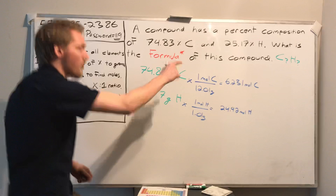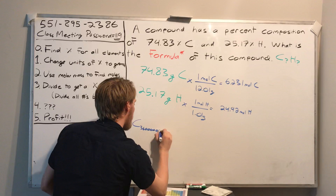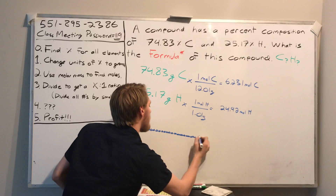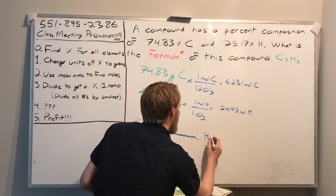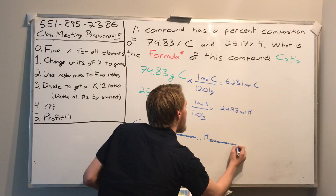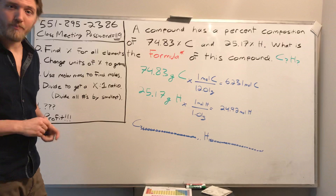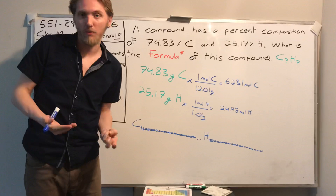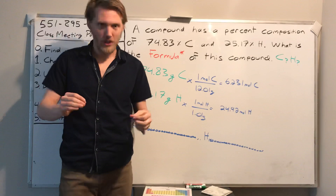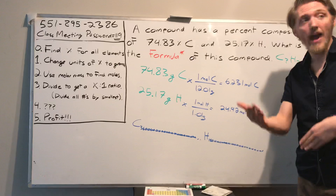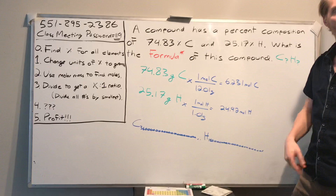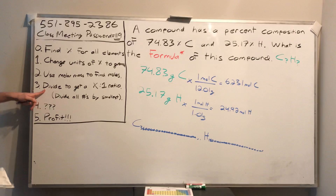But writing out those giant numbers as a formula doesn't make sense. What we have is literally the count in our imaginary 100-gram sample, but that doesn't reflect the ratio. A formula is just a ratio — the ratio of atoms of one type to another. So we don't need the total number of atoms; we want the ratio. That gets us to step three: divide to get a something-to-one ratio.